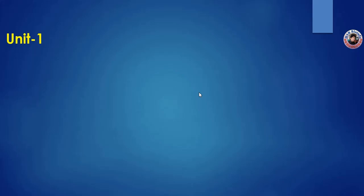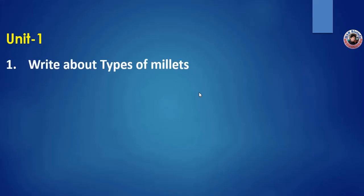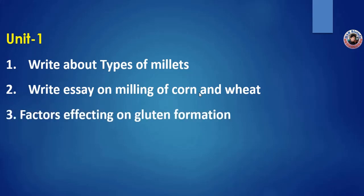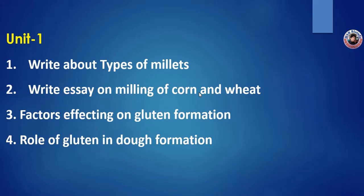From the long answers, the first question: write about the types of millets. Second question: write about milling of corn and wheat — the process of milling. Third question: factors affecting gluten formation. Fourth question: role of gluten in dough formation. This is Unit 1.